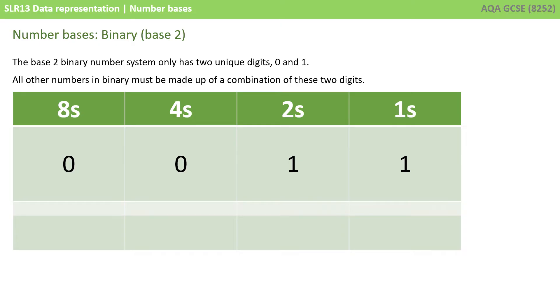We just apply the same rules we did for the decimal system. Here, I have 0 lots of eights added to 0 lots of fours. I've got 1 two, and I'm adding that to 1 one. So, the number 11 in binary is 3 in decimal. And you need to read this as 1, 1, and obviously not 11, because 11 is a decimal number.